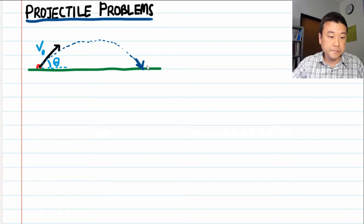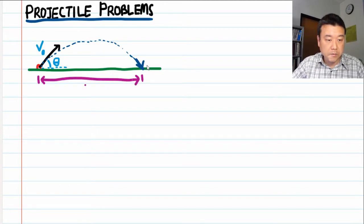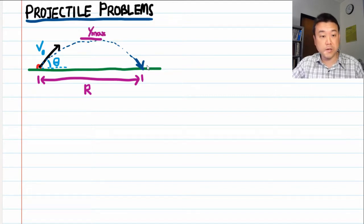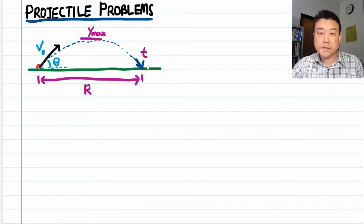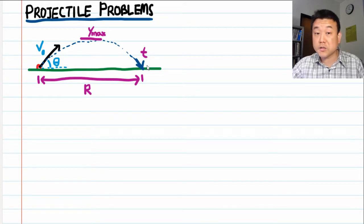So the projectile follows some trajectory and lands and there are some common things we can ask about this setup. We can ask what is the range R. We can ask what is the highest height reached by the projectile or you can ask at what time does the projectile land.